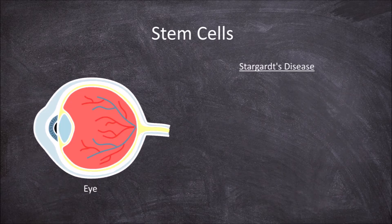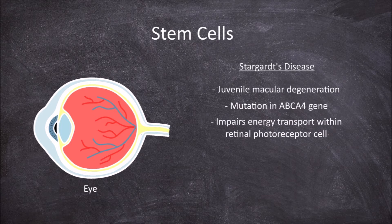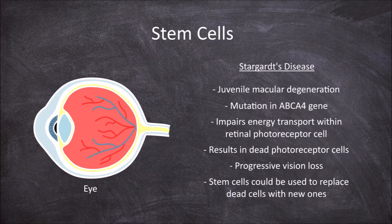Stargardt's disease is an example of a disease where stem cell therapy is being researched. Stargardt's disease is a form of juvenile macular degeneration. It is caused by a mutation in the ABCA4 gene and is recessive. The mutation impairs energy transport within the retinal photoreceptor cell, which results in the photoreceptors dying in the centre of the retina, causing progressive vision loss that begins in childhood or adolescence. Stem cells could be used to treat Stargardt's disease by replacing the dead cells in the retina with new ones derived from stem cells.